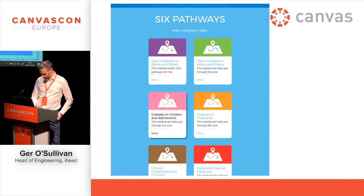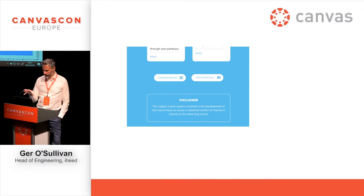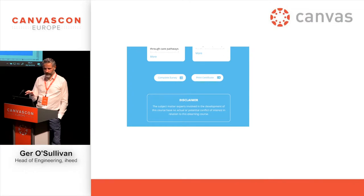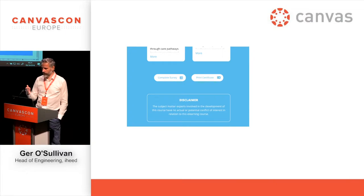At the bottom, we have a 'complete survey' link. Once students have completed the course they can complete a survey, and then they can print a certificate right within Canvas. We've written our own LTI tool that does a lookup, makes sure they've passed some quizzes, and then you can actually generate a PDF certificate right there in Canvas, which is quite cool.